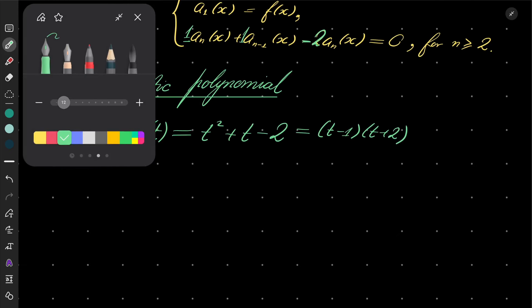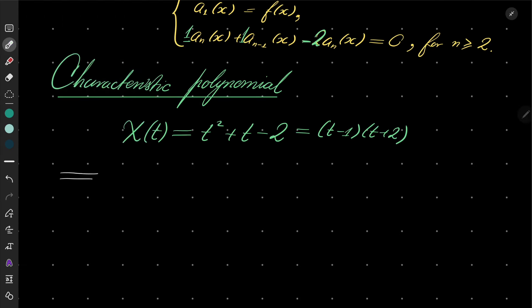Now it's pretty easy to factorize the characteristic polynomial: it's (t-1)(t+2), and that means we know the general form of solution of our recursion.